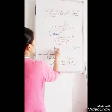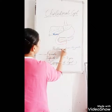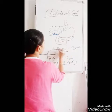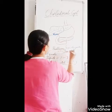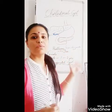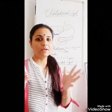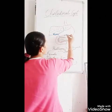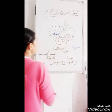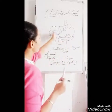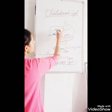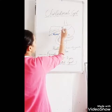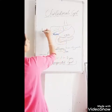This is the biliary tree. The cyst is formed in the bile duct network, commonly in the common bile duct. This is the network of the bile ducts inside the liver - these are the hepatic ducts.